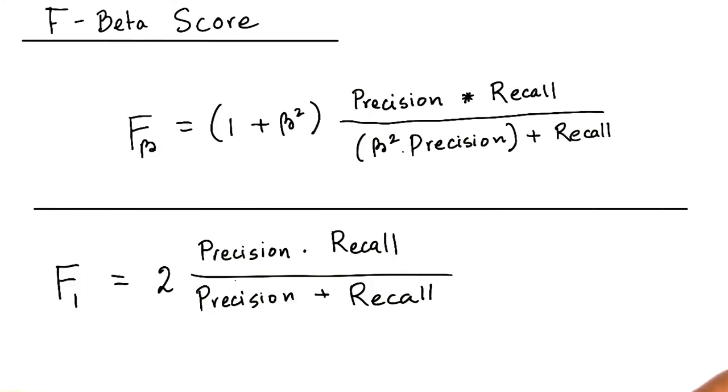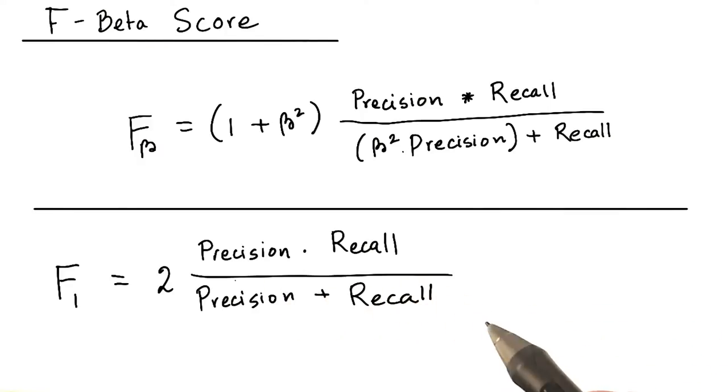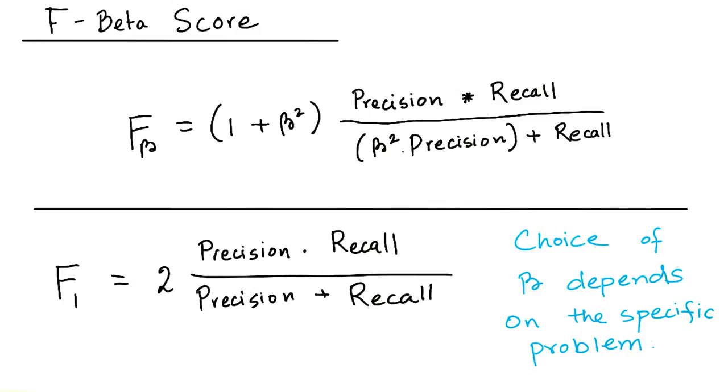One can use different values of beta that gives different weights to precision and recall. Much like the loss function, the choice of beta here depends on the specific problem under consideration.